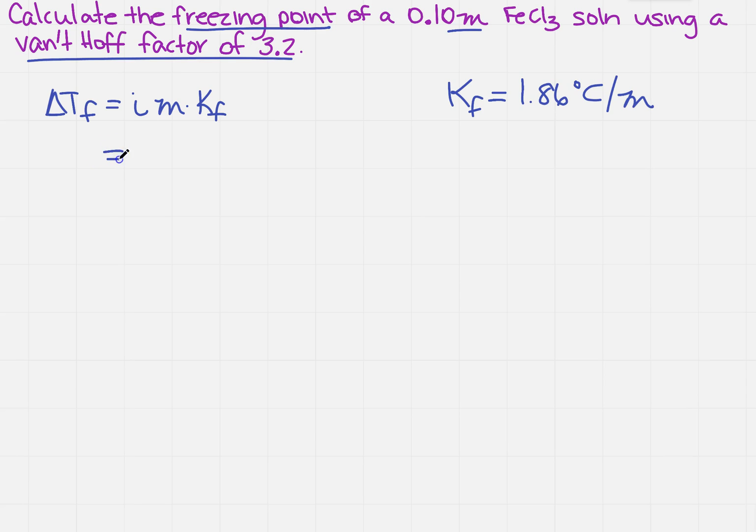Well I know what i is, it says it's 3.2. I know what m is, it says it's 0.10 molality. And now I know what K is, because I've got 1.86 degrees C over molality. And if you recall, the reason I did the m's the way is so that they would cancel.